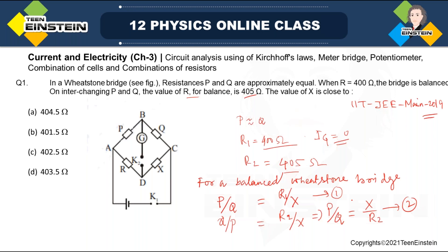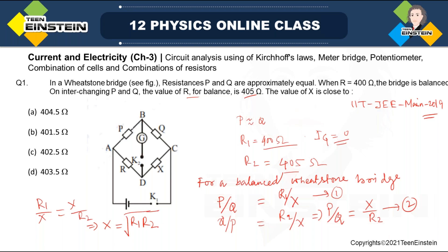From equations 1 and 2, we can write R1/X = X/R2, which means X² = R1 × R2, and therefore X = √(R1 × R2). Now putting in the values R1 = 400 and R2 = 405, and doing the calculation, we get X ≈ 402.5 ohm.